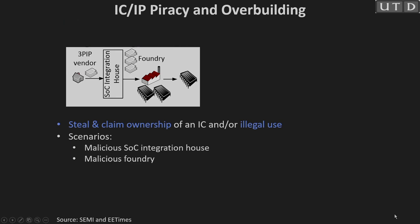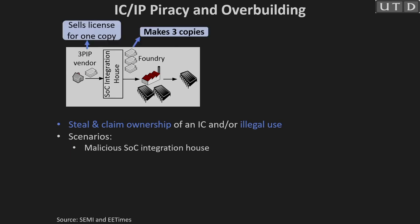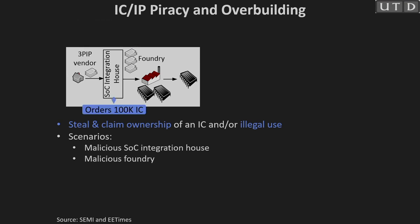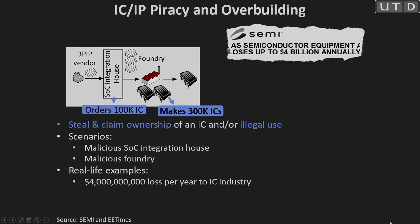There are two things. Piracy is basically when you reverse engineer the netlist and from there you can actually do your own thing - you get the intellectual property and you can pirate it. Overbuilding is something very easy: if I order say 100k ICs and you actually build 300k, you can sell 200k in the black market at half price because you do not have to invest in the development of the whole IP.